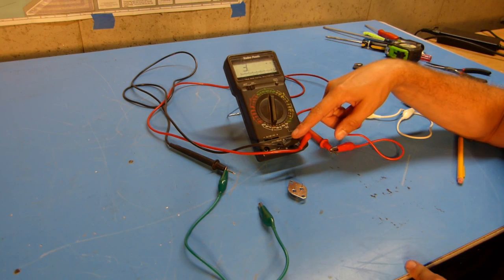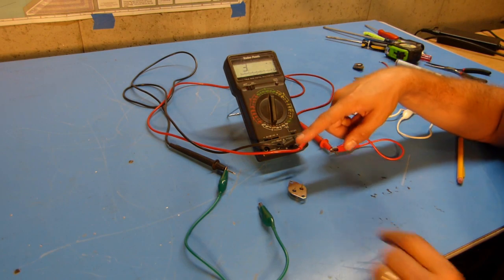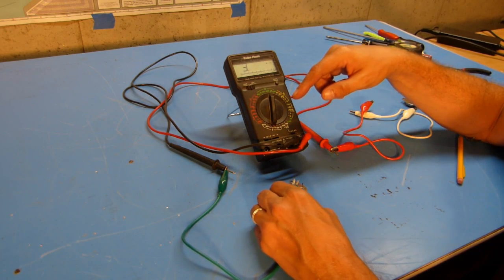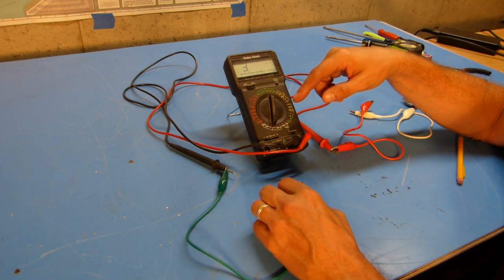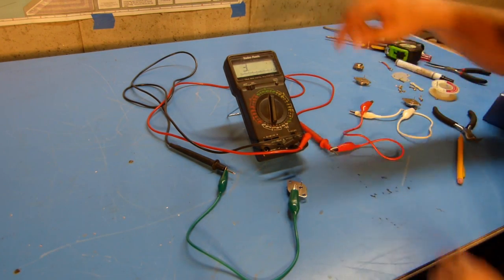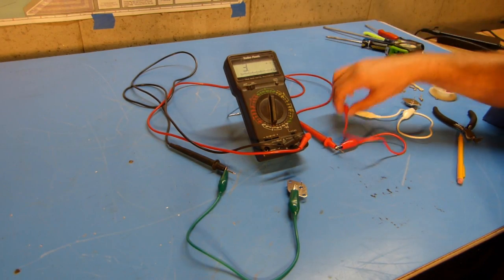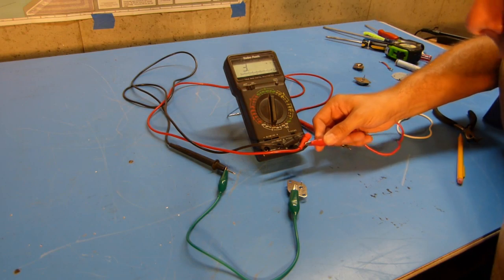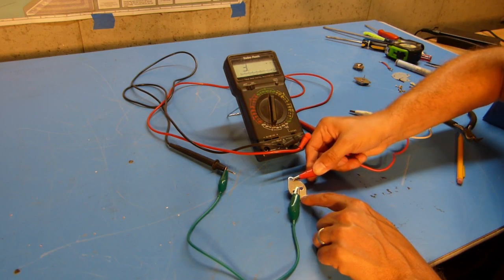Now attached to my negative lead here I've got a green alligator clip wire and I'm going to connect that to my emitter pin on the transistor which is the left side pin. The next thing that I'll do is I'll take the positive lead and I will connect that to the case or collector of the transistor.